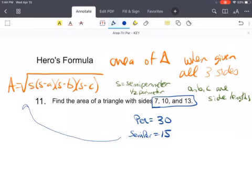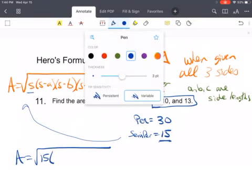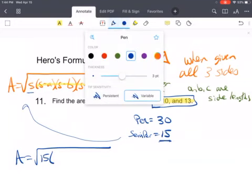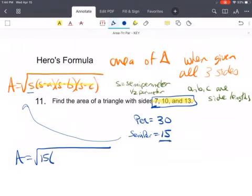Then plugging this into my formula, area equals the square root of s, which I just found is 15. And then take my semi-perimeter and subtract it from all of its side lengths. So first, 15 minus 7 is 8.